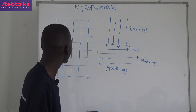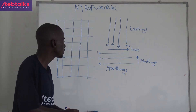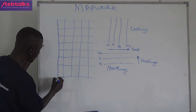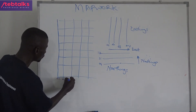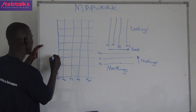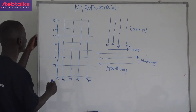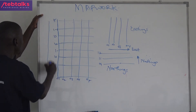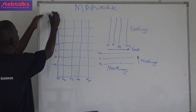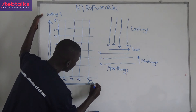Whenever you are told to state the grid reference, we are required to begin from the eastings, then go to the northings. For example: eastings 01, 02, 03, 04, 05; northings 09, 10, 11, 12, 13, 14, 15. The lines going to the north are referred to as northings, and those going to the east are called eastings. That is very important to note.